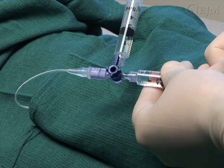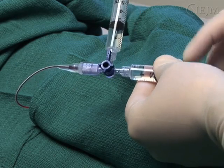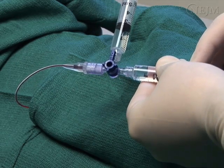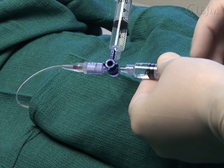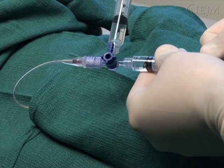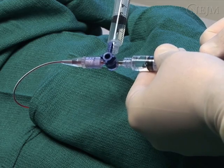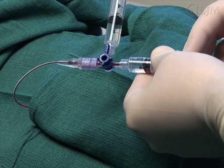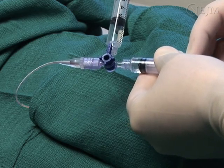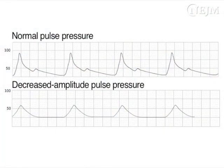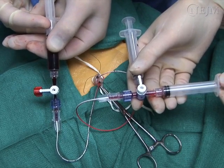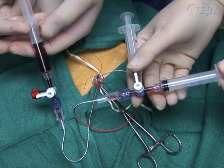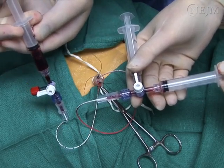To prevent clot formation, keep the catheter free of blood by flushing it with 0.5 milliliters of solution each time blood is drawn from the catheter. Solution should flow continuously through the catheter to prevent retrograde flow. Watch closely for evidence of clot formation, including difficulty withdrawing blood samples or decreased amplitude of pulse pressure on a blood pressure tracing. If a clot forms, do not attempt to flush the clot forcibly. Unless the line is critical, it should be removed.